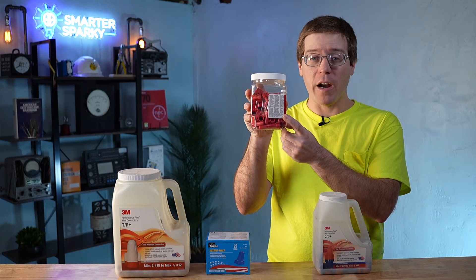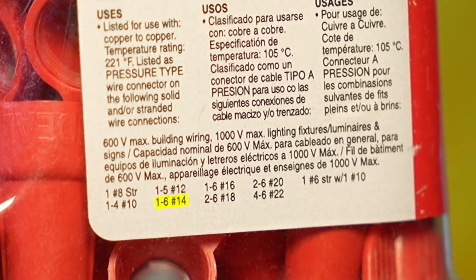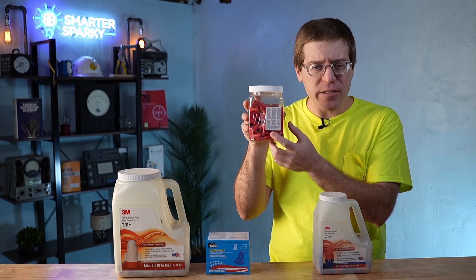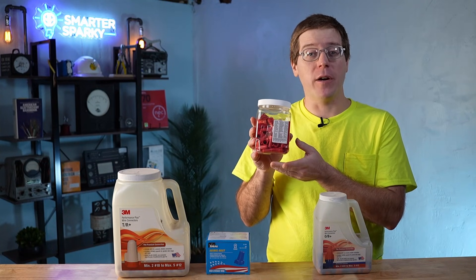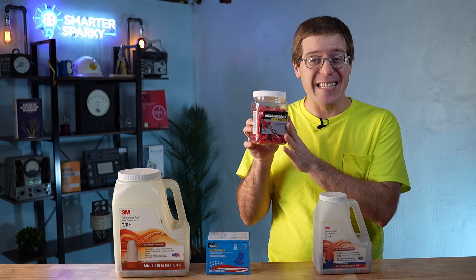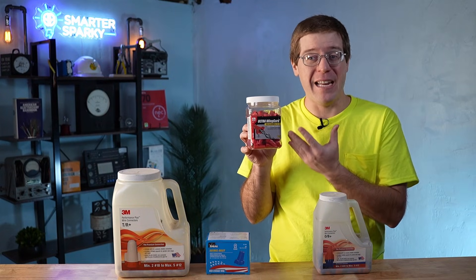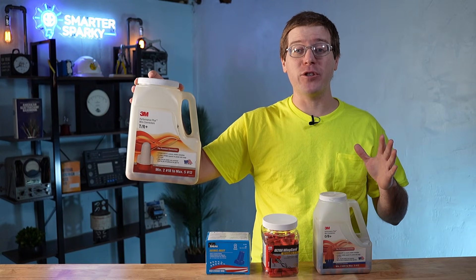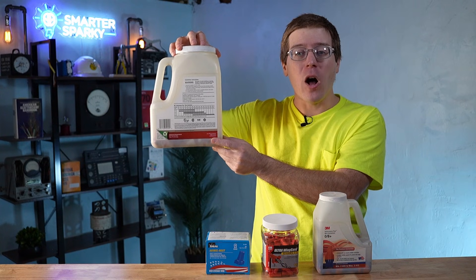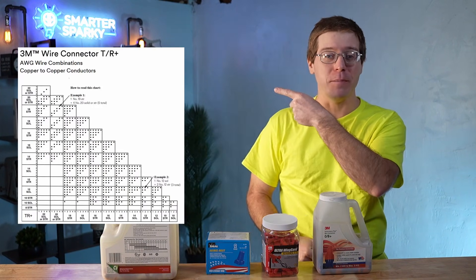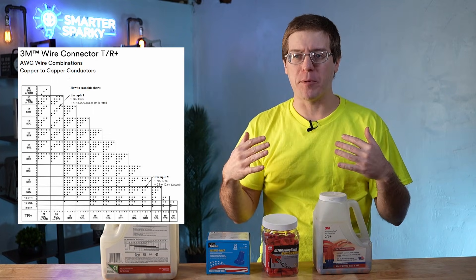For example, these wire nuts are good for 1 to 5 number 12 gauge wires, or 1 to 6 number 14 gauge wires, and so on. But what if you need to splice a 12 gauge wire to a pair of 14 gauge wires? Unfortunately, these DIY grade wire nuts can leave it ambiguous whether or not that combination is acceptable. Some professional grade wire nuts, like these here, not only list the wire ranges,